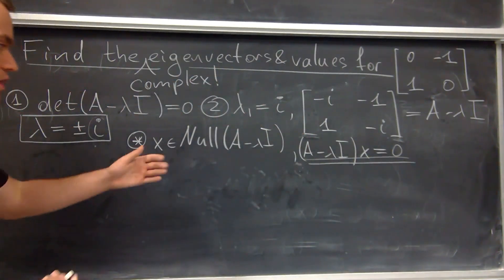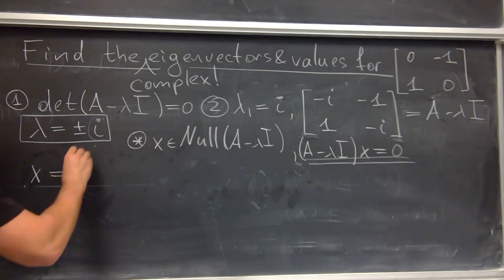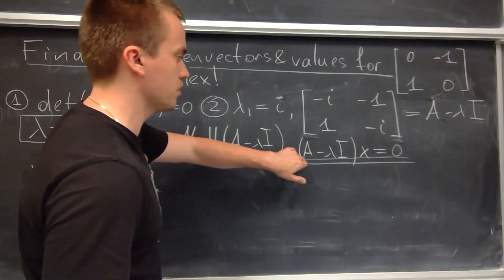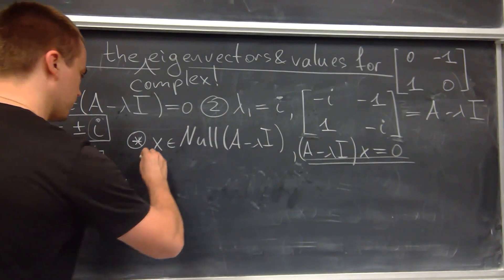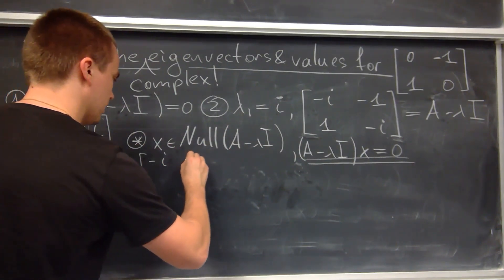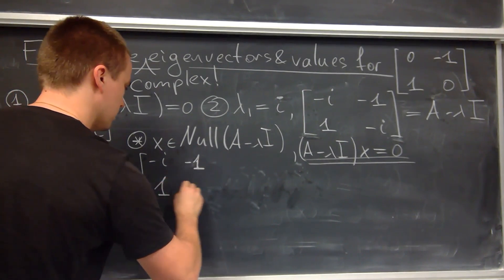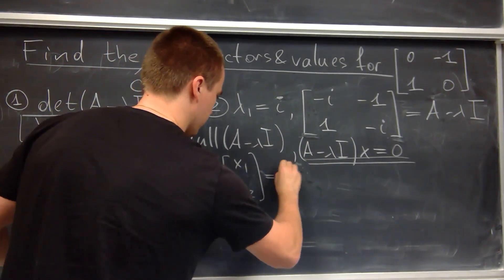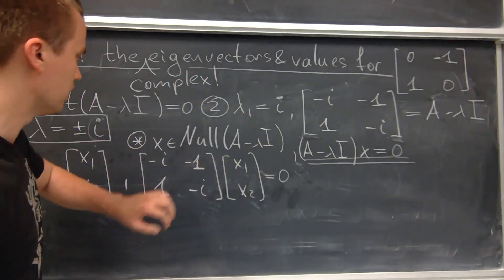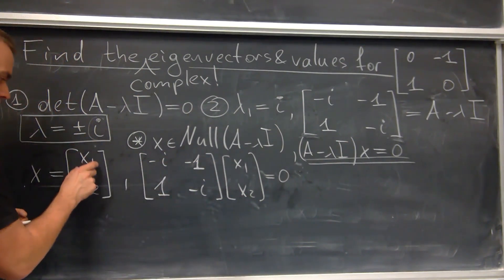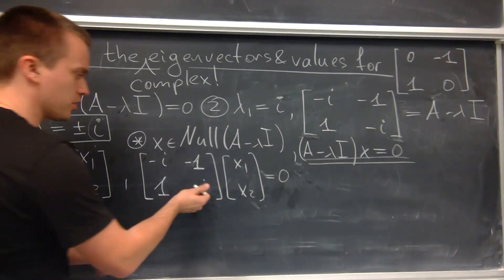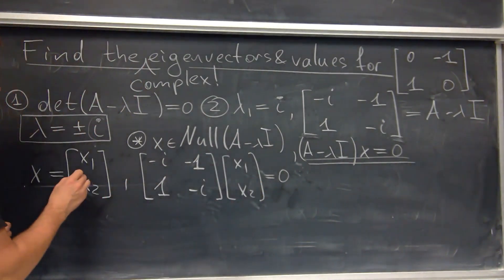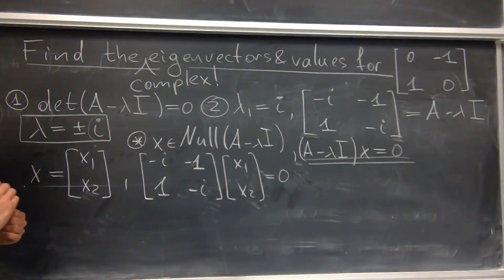I want to find all possible x for which this is true. So I let x have coordinates x1 and x2, and I want to solve the system: the matrix with entries minus i, minus 1, 1, minus i, multiplied by the vector x1, x2, equals zero. By solving the system I will find the relation between x1 and x2, and from that relation I will determine my eigenvectors.